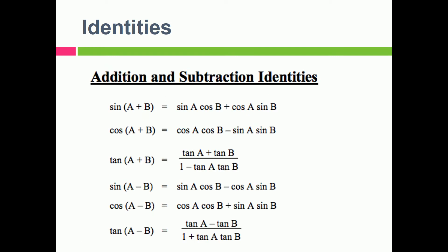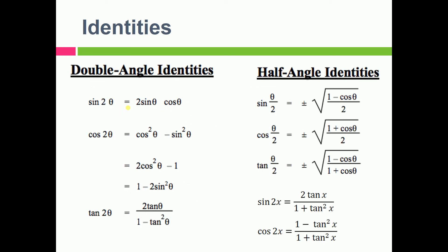Then addition and subtraction identities. We have sine(a + b), cos(a + b), tan(a + b), sine(a - b), cos(a - b), tan(a - b). So just mug all these formulas as it is.